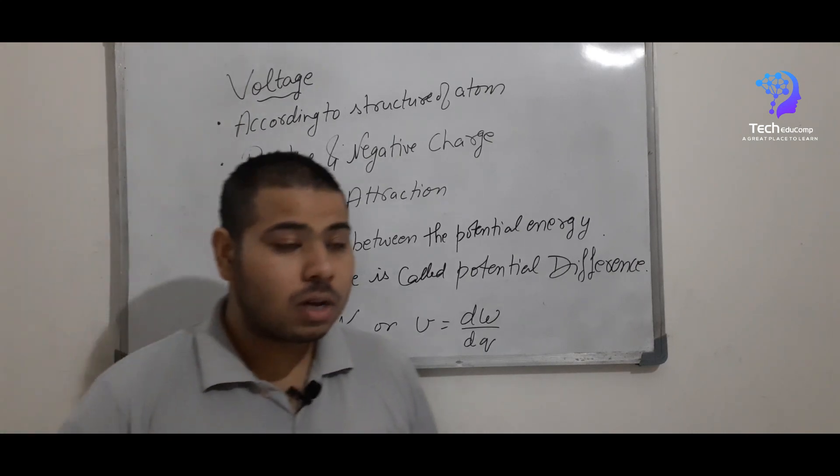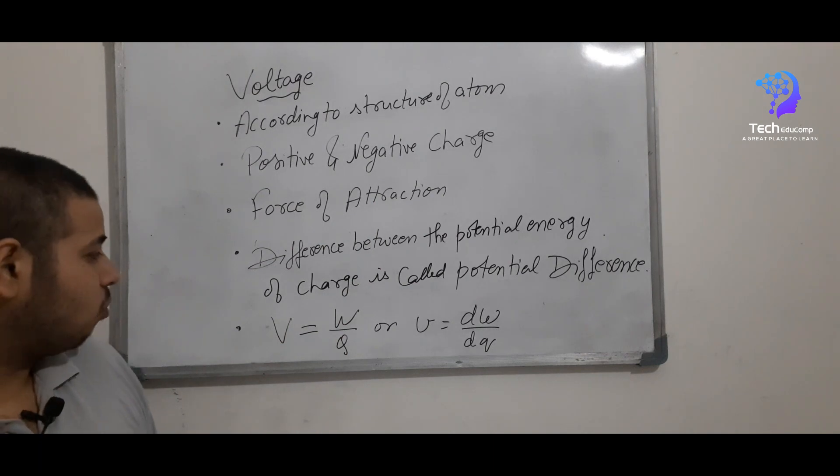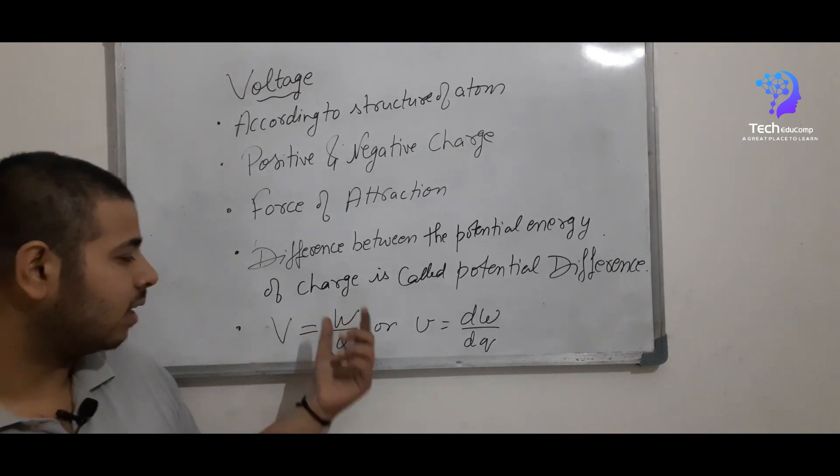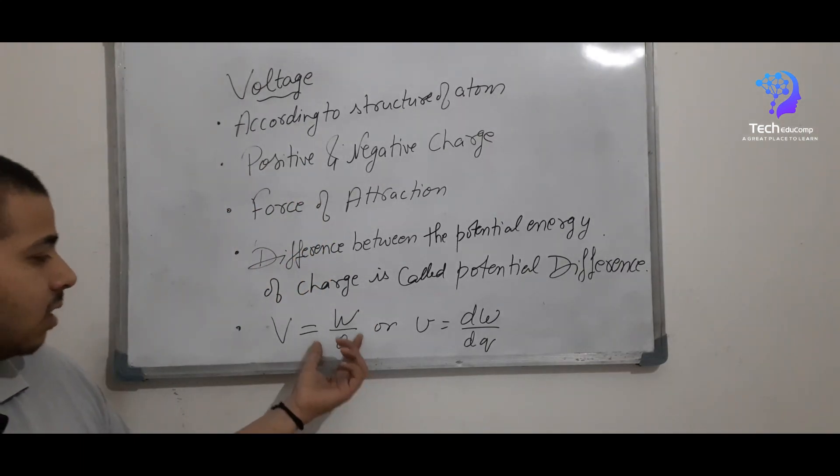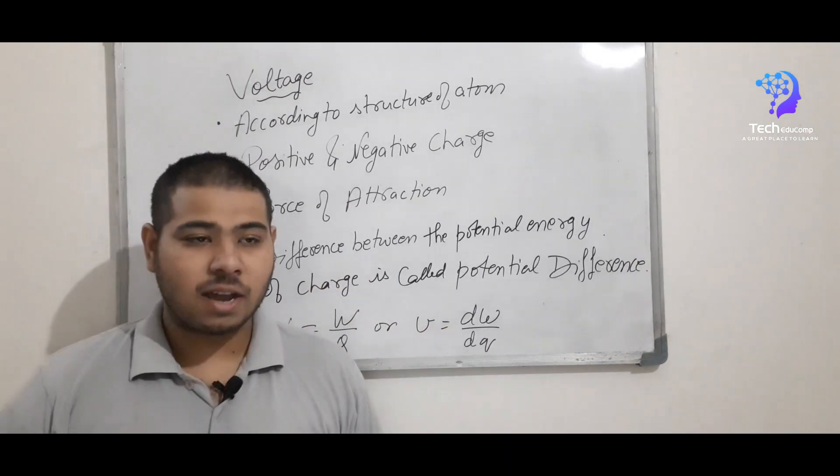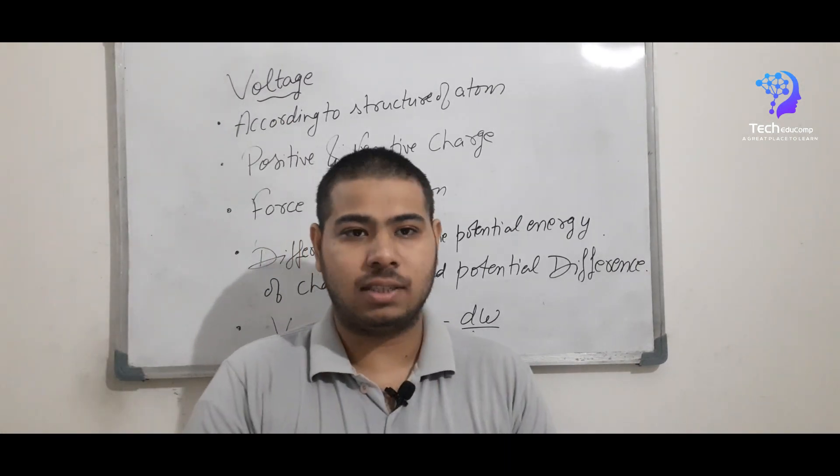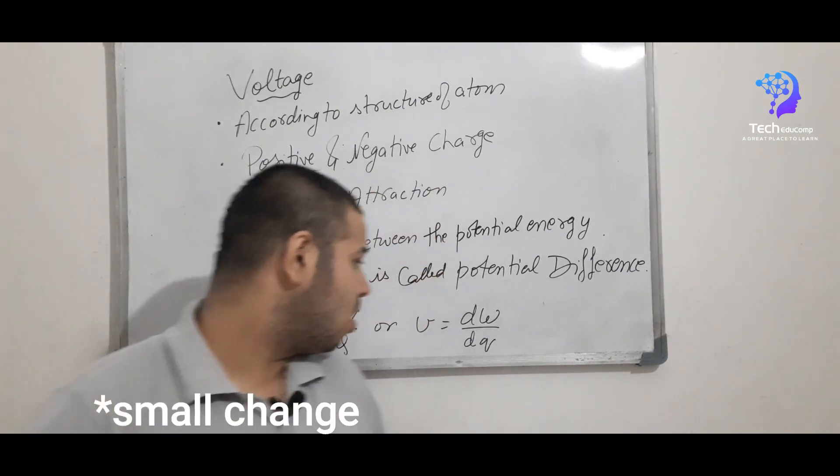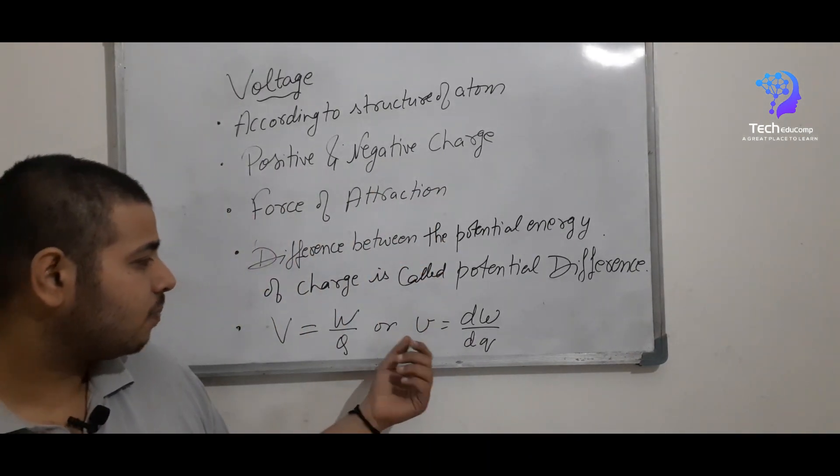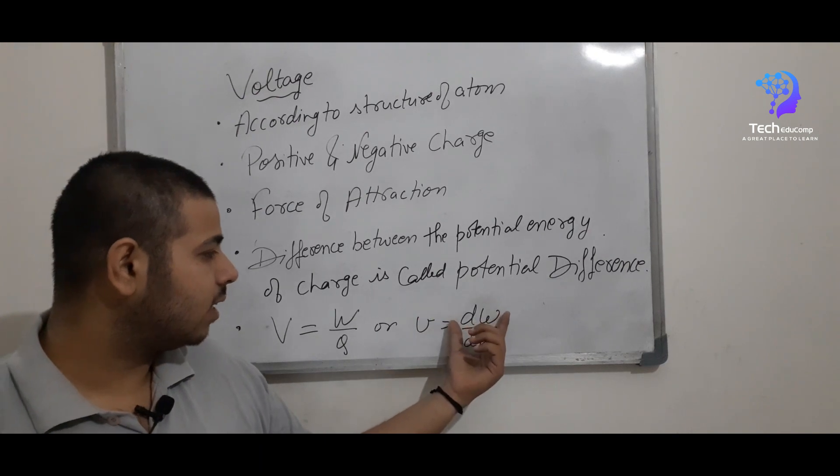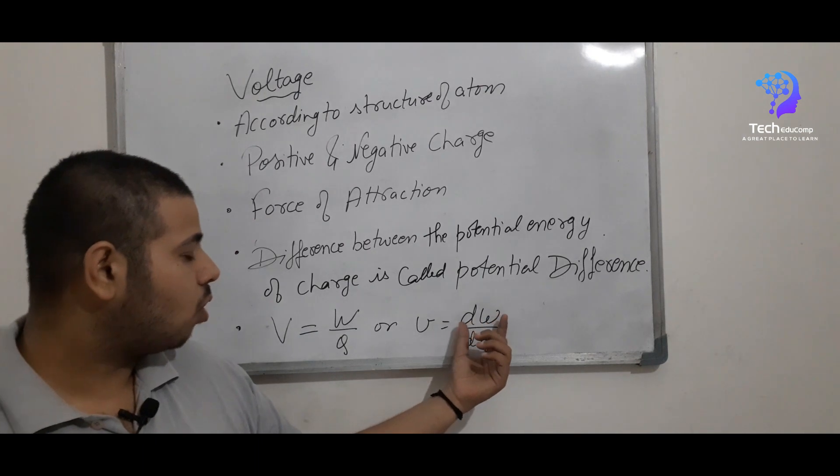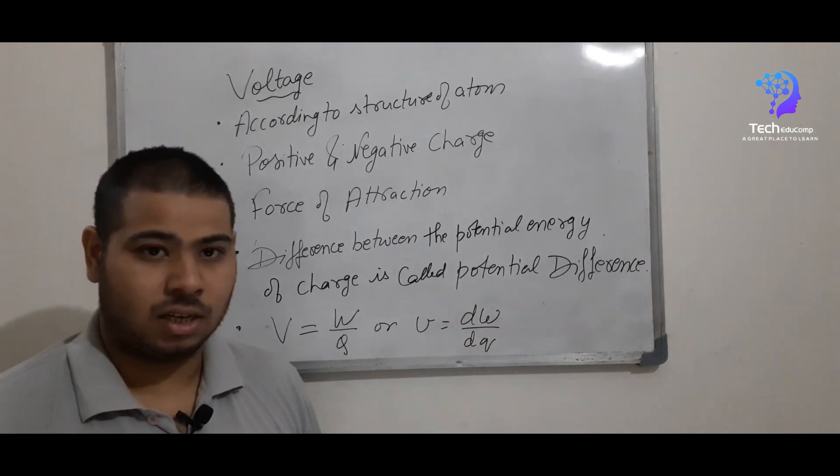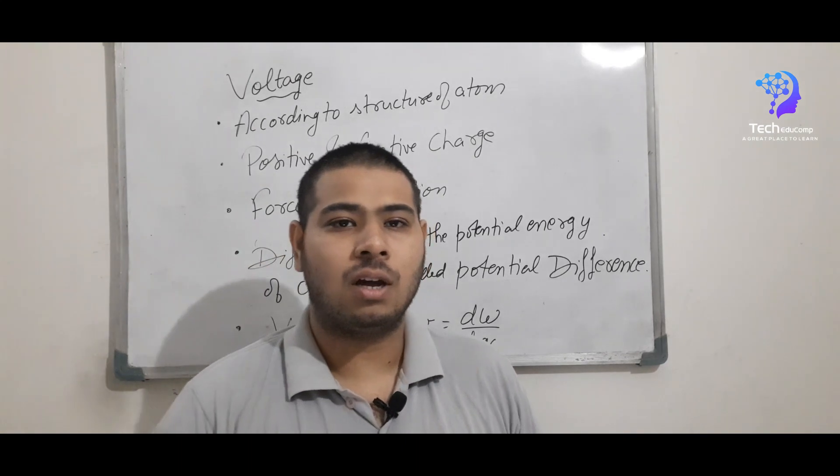Which can be noted by either capital V or small v. And also we can mathematically represent this voltage by W by Q. Now this W means here is work done or energy. And Q here represents charge. If we can say we have to define for small distance, we can use this small v which is equal to dW by dQ which is small energy by small charge. So this was the formula for voltage.